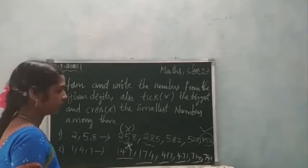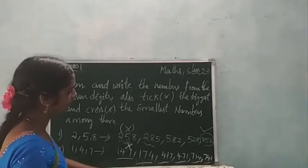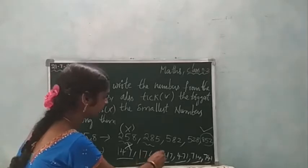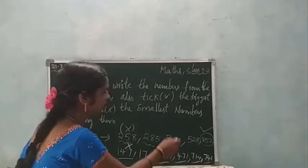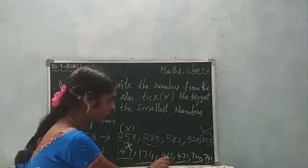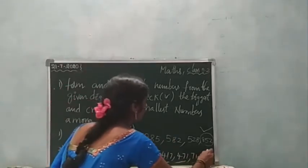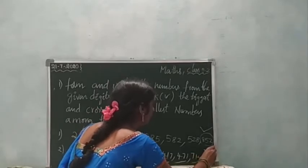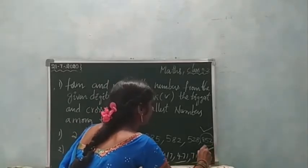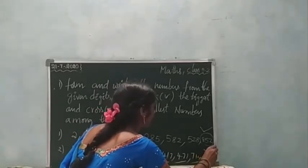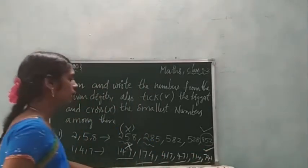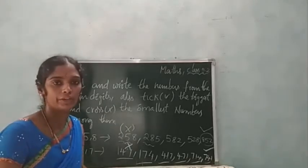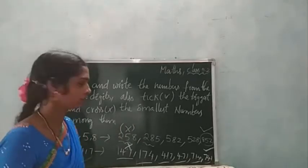And the biggest number: from 174, 471, 714, 740, and 741 — so 741 is the biggest number, so I can put a tick mark here. Okay children, do you understand?